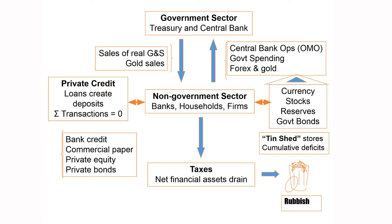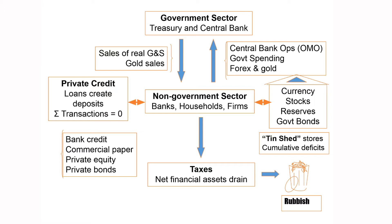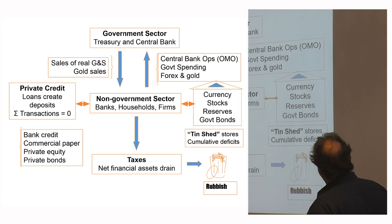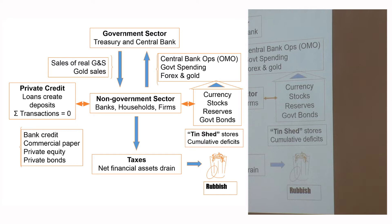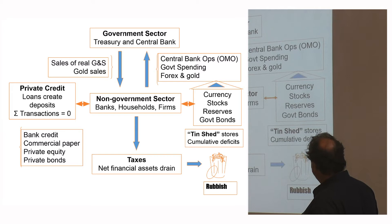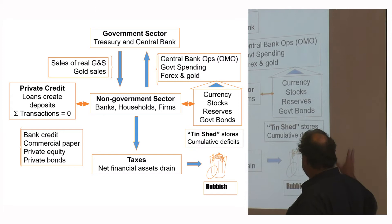Governments can purchase goods and services from the non-government sector, and central bank operations involve buying and selling bonds. Government spending injects funds into the non-government sector. The horizontal transactions are within banks, households, and firms in the non-government sector.